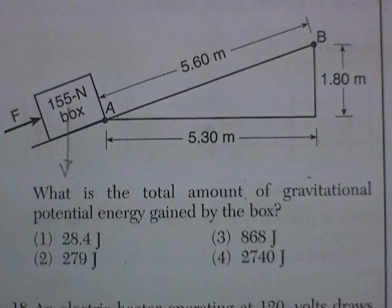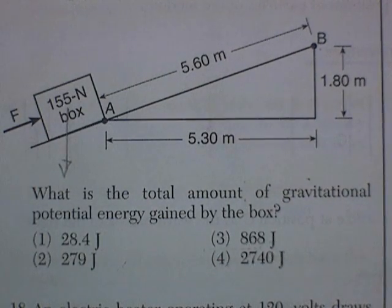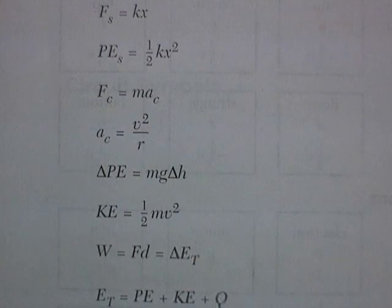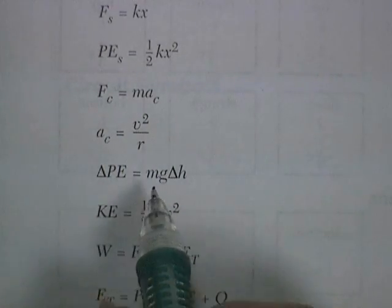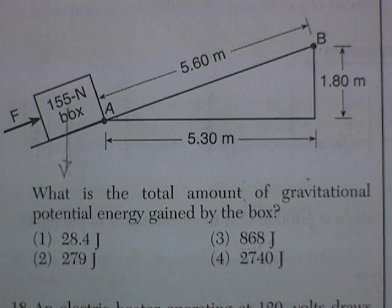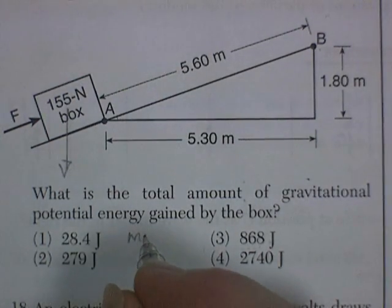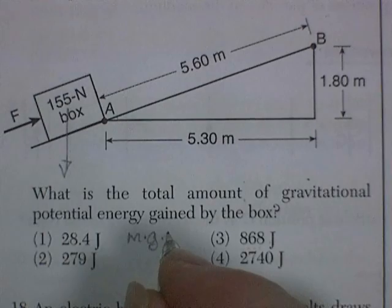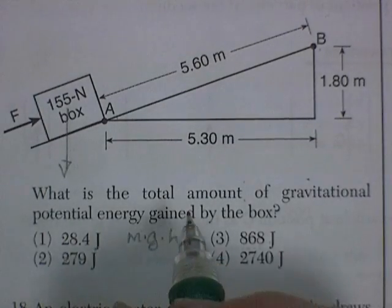What's the total amount of gravitational energy gained by the box? I'll find a formula. Potential energy as a result of gravity is MGH. So it's the mass times the pull of gravity times the height. Now here's the trick to this question. They've given you MGH.